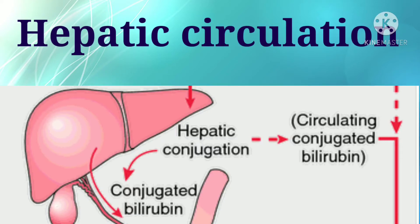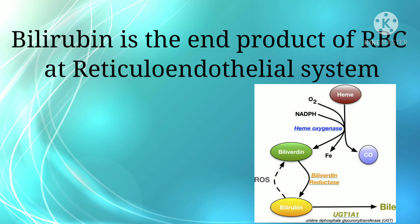Hello friends, in this video we will look at hepatic circulation — how unconjugated bilirubin is converted into conjugated bilirubin, and how urobilinogen is excreted outside the body. This all comes under hepatic circulation, and in this video I will explain about it.